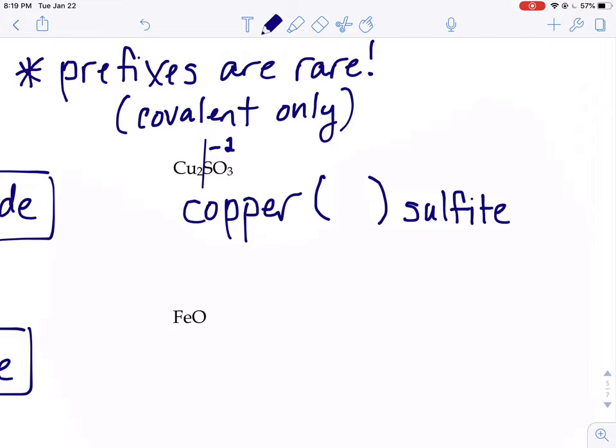So if the right-hand side of that compound is negative 2, that would mean the left-hand side would have to be positive 2 total in order to balance that out. So we have two choices of what that copper ion could be. We said it could either be plus 1 or plus 2.